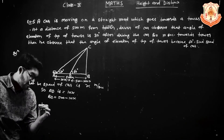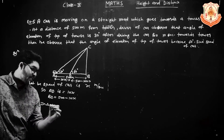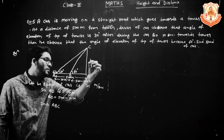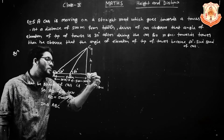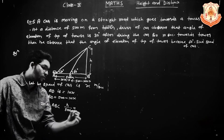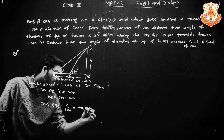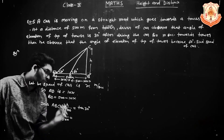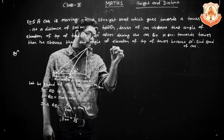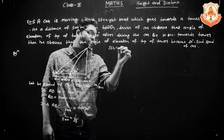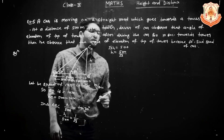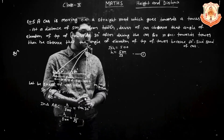In triangle ABC: H upon 500 equals tan 30 degrees, which equals 1 upon root 3. After cross multiplication, root 3 H equals 500, so H equals 500 upon root 3. This is equation 1.